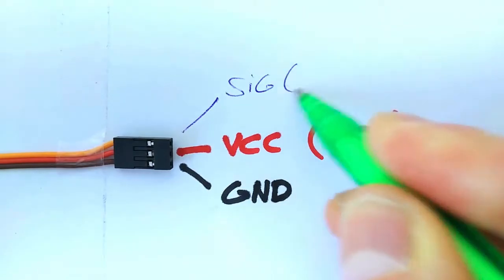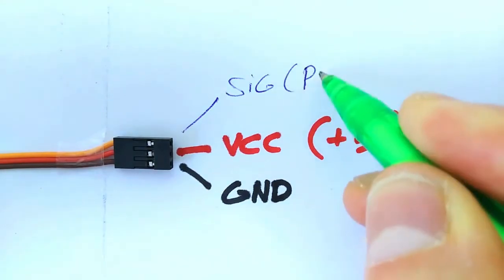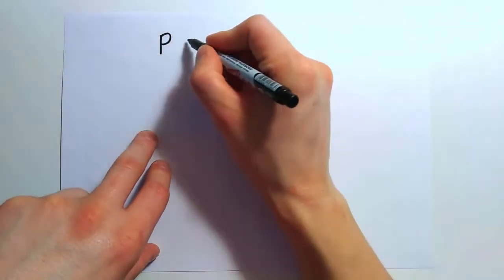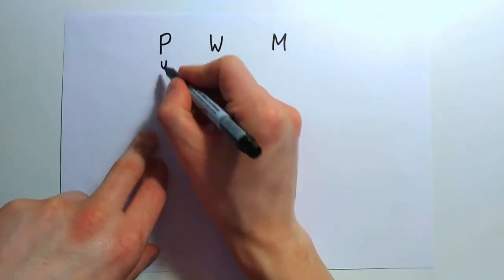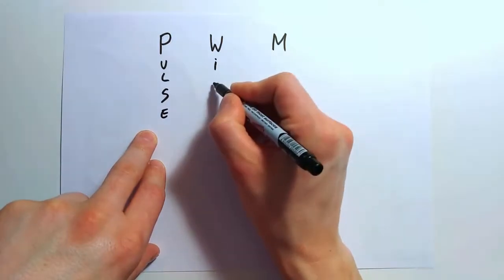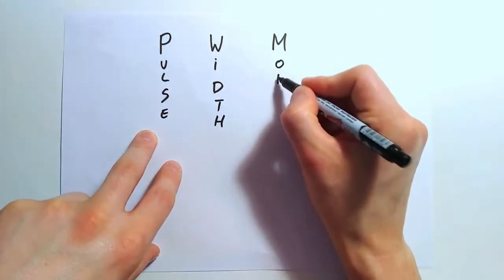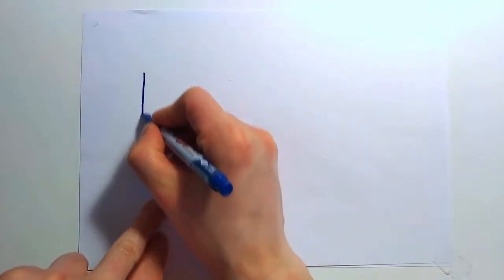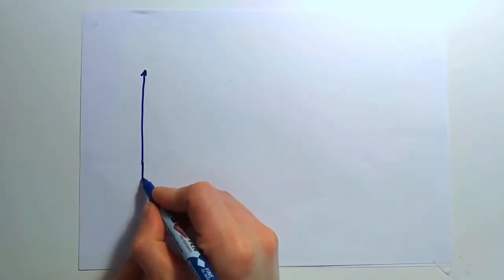But what is PWM? PWM stands for Pulse Width Modulation. To explain what that is, let's consider this diagram. On one axis will display the time, commonly in milliseconds. The other axis will represent voltage.